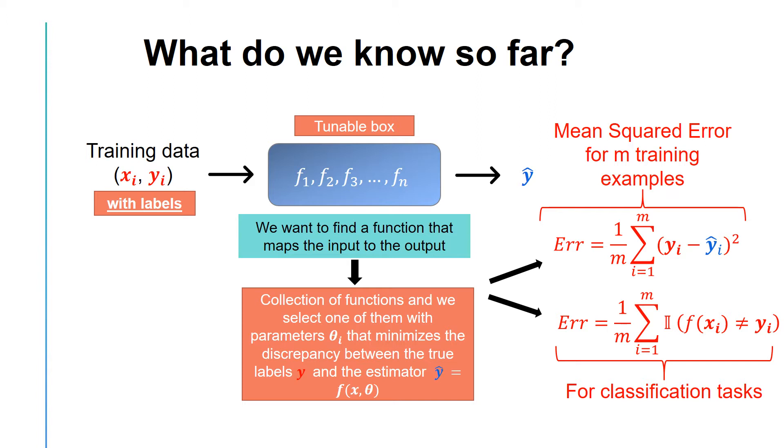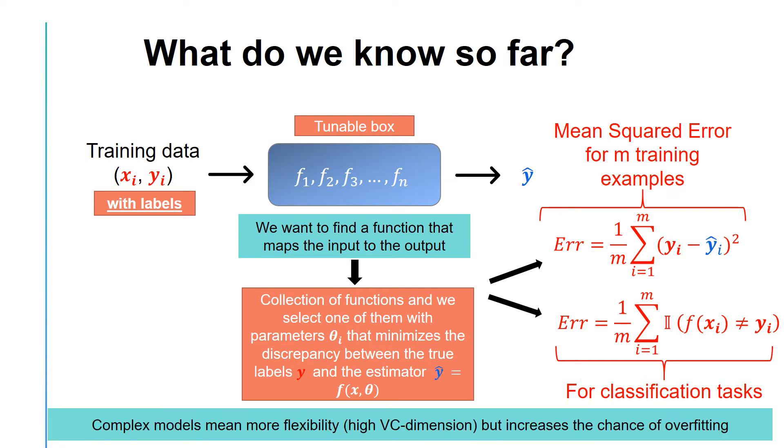We discussed model complexity, which is represented by the VC dimension, also known as the degrees of freedom. Higher degrees of freedom can be good or bad. It can be good because it represents more flexibility in the set of functions we can pick as there is a larger set of functions available.